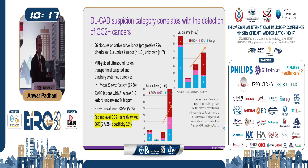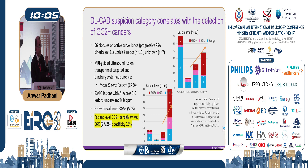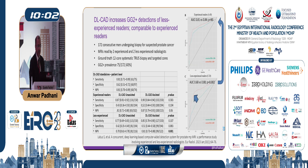However, the AI still misses cancers — one cancer was missed and six lesions were also missed. AI is not 100%.